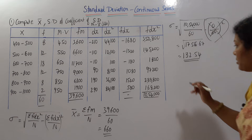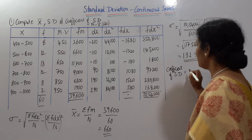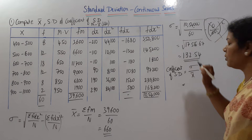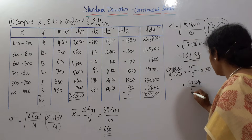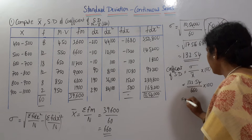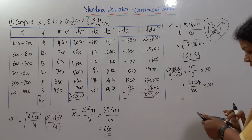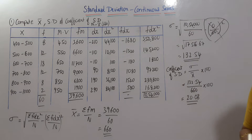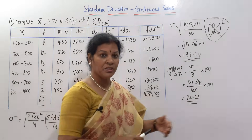Next, the coefficient of standard deviation. The formula is rho by x̄ into 100. Rho is standard deviation, which is 132.54. x̄ is 660. So 132.54 divided by 660 into 100 equals 20.08. The coefficient of standard deviation is 20.08%.